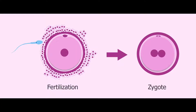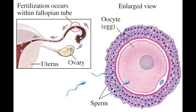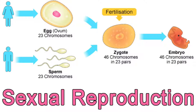Offspring that result from sexual reproduction are genetically different from each other and from their parents. This genetic diversity introduces new traits into a population that may help an organism survive. For example, a mouse may inherit a combination of genes that results in a new fur color. If the new fur color blends into the environment better than other fur colors, the mouse is harder for a predator to see and is likely to survive longer.